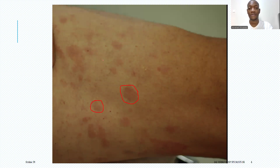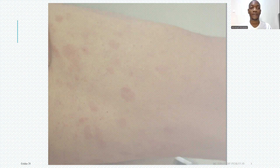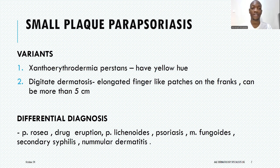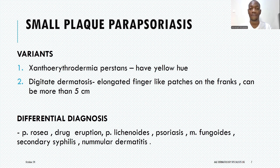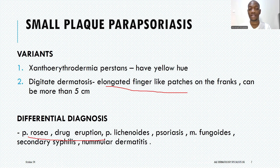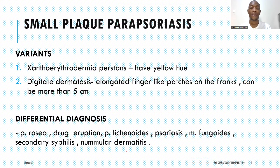Other conditions in the differential include pityriasis versicolor, because they also give patches with a superficial scale. Even secondary syphilis can give a similar picture. Regarding the variants discussed, some literature describes the xanthoerythrodermia perstans — a type of small plaque parasoriasis that comes with a yellow hue, more easily seen in patients with fair skin, Fitzpatrick skin types one to three. The digitate variant presents with elongated finger-like patches, often on the trunk, and can be more than five centimeters in diameter. The differential list includes pityriasis rosea, drug eruption, pityriasis lichenoides, psoriasis, mycosis fungoides, secondary syphilis, and nummular dermatitis.